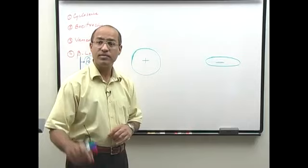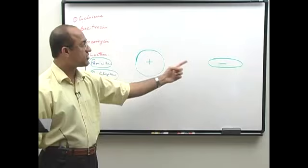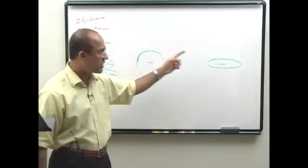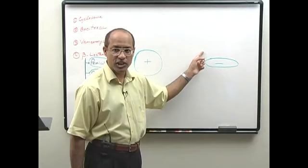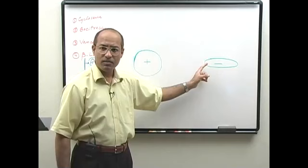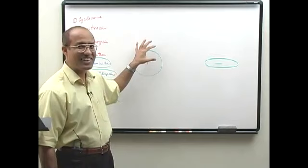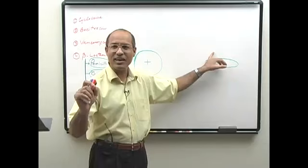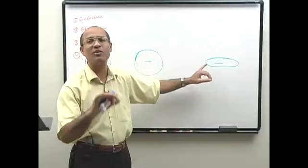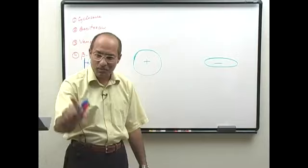What is the difference in the structure of the cell wall of gram positive and gram negative bacteria? One difference is thickness — gram positive is thicker and gram negative cell wall is thinner. Due to this reason, penicillin G should be more effective on gram positive than gram negative.